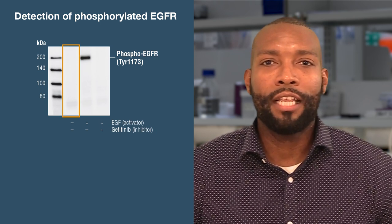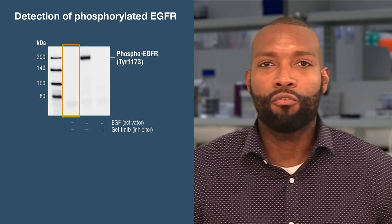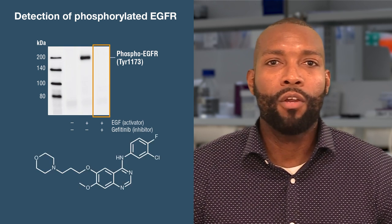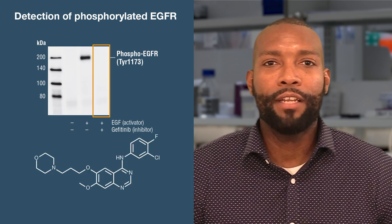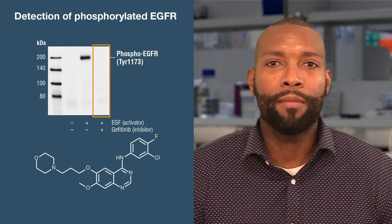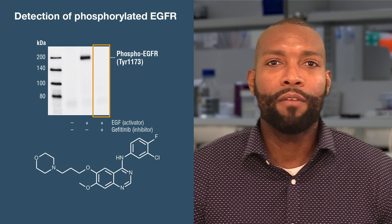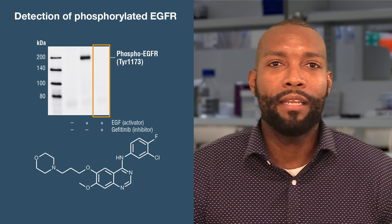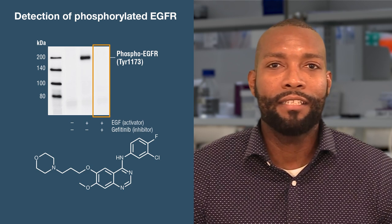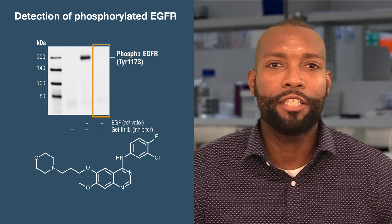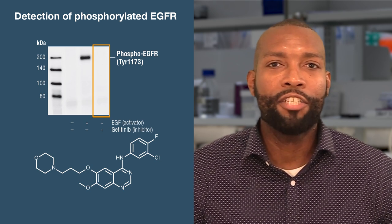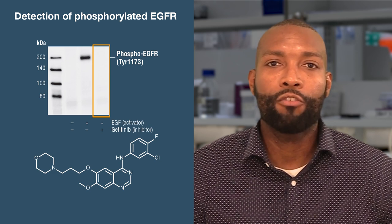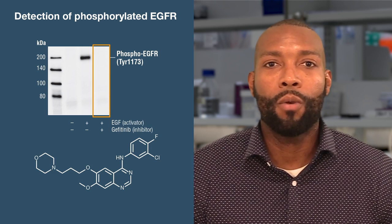Input samples were cell lysates from either control cells, cells activated with EGF, or EGF-activated cells pre-treated with gefitinib, an inhibitor of EGFR kinase. The absence of a band in the last lane suggests that EGFR phosphorylation at tyrosine 1173 was inhibited, but further controls are required.